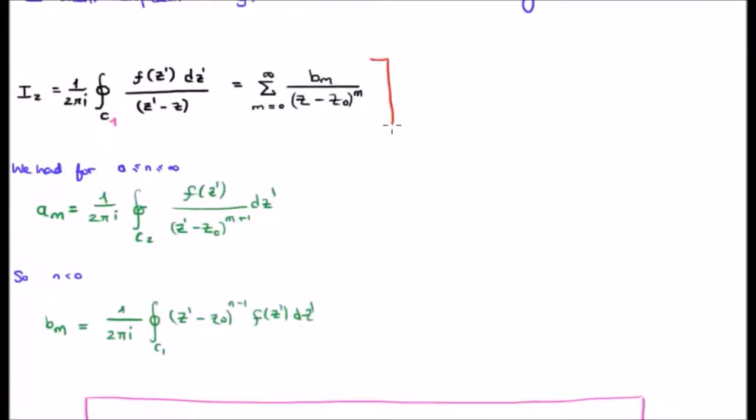So, we can say that the integral I sub 2, which corresponds to the B sub m's, can be written in the following power series format, where we go from m is equal to zero to infinity of B sub m divided by Z minus Z zero to m.